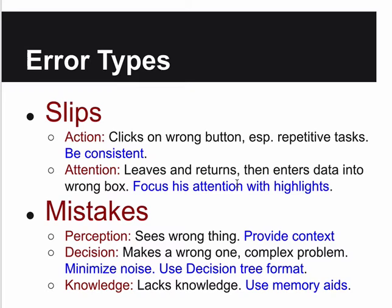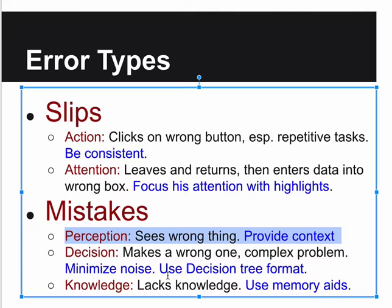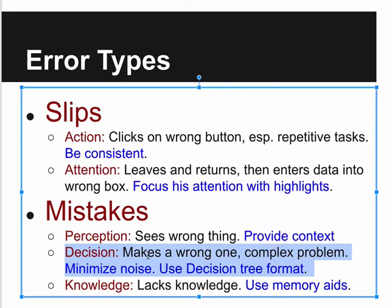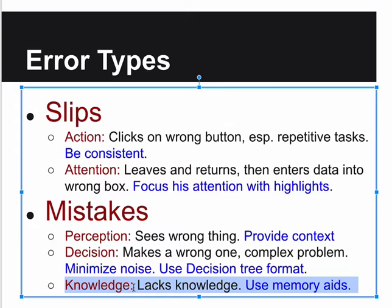There are also mistakes - when the user perceives something wrong, reads something incorrectly, or makes a bad decision. For decision problems, you want to help them recover - that's what the back button is for. Then there are knowledge mistakes: if you have tons of commands or menus, the user might forget where something is. You have to find ways to help the user remember what they need to do and how to use your program.